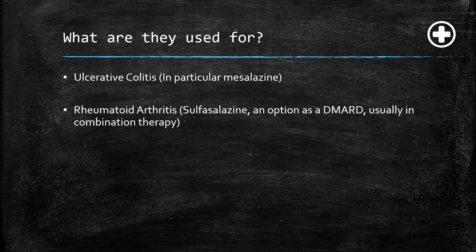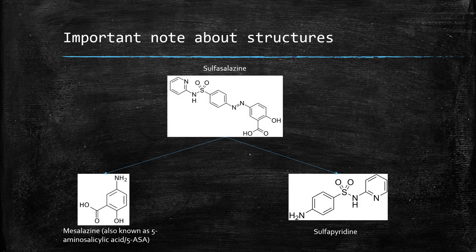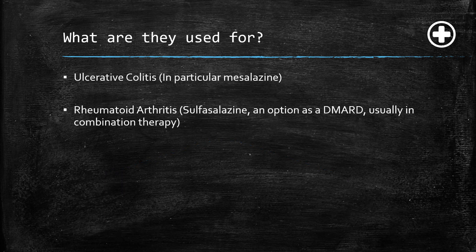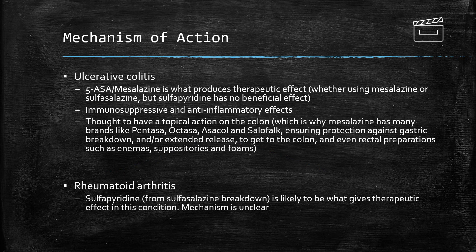So in rheumatoid arthritis we would use sulfasalazine because it produces sulfapyridine. We would use mesalazine in ulcerative colitis because that is what we need for the anti-inflammatory and immunosuppressive effect, though sulfasalazine can also be used there since it produces mesalazine too. Olsalazine and balsalazide are a lot less common, but do be aware of them.